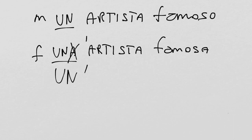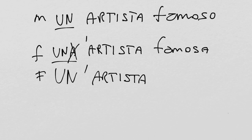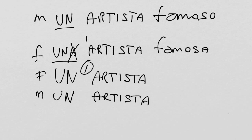Now, una artista — we can remove the ending of una, and it becomes un'artista. The masculine form is un artista, without an apostrophe. So the only difference here is the apostrophe.